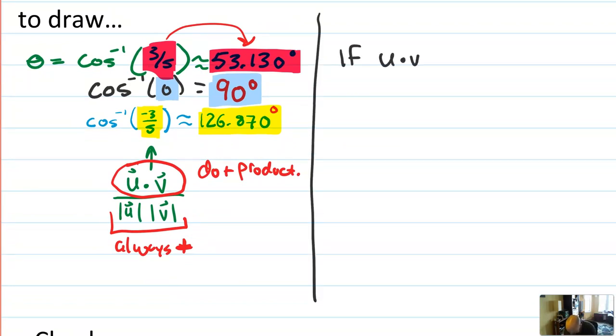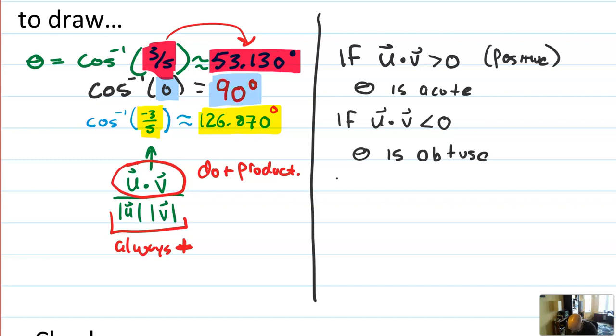And that leads us to a really interesting conclusion. If u dot v is greater than zero, that is, it's positive, then the angle between the vectors, theta, is acute. If u dot v is less than zero, then theta is obtuse. And most importantly, if u dot v is exactly equal to zero, then you're always going to be doing cosine inverse of zero and theta will exactly equal 90 degrees. Those are really useful facts about vectors.